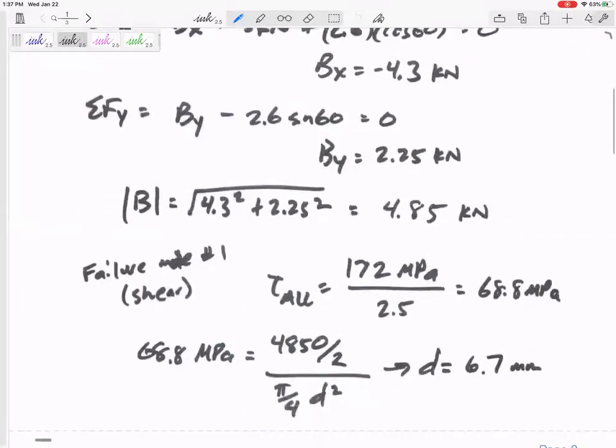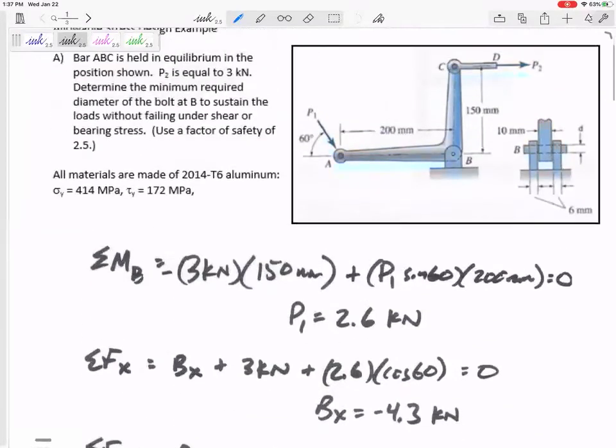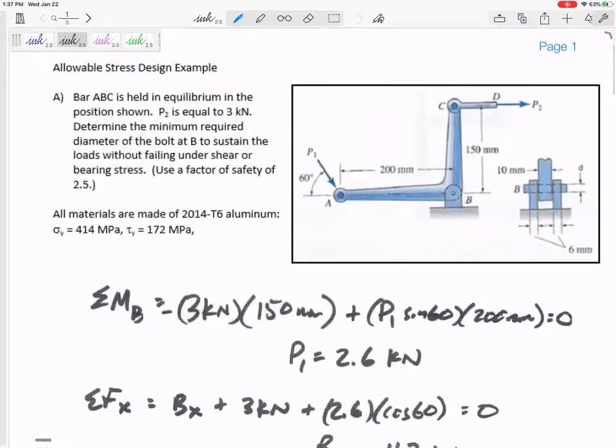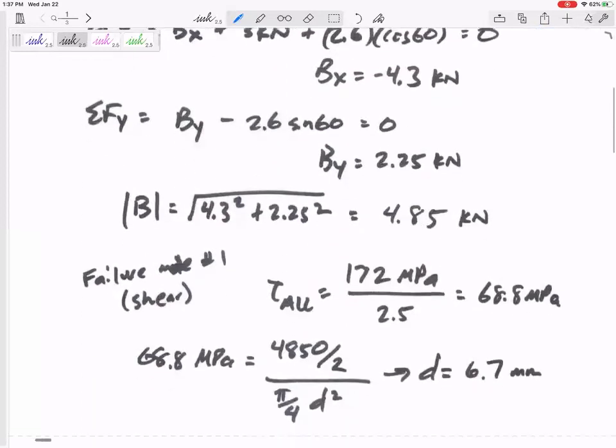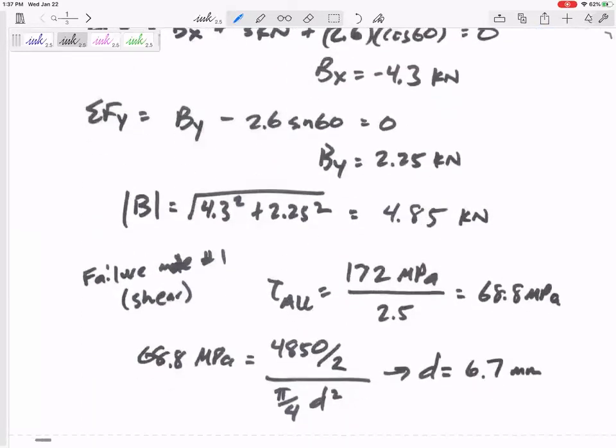For this pin we were given shear and bearing stresses, so kind of a red flag - at this pin check both shear and bearing. I said okay, well what if it fails due to shear? First of all, I know it's going to fail at 172 MPa and I was told to use a factor of safety of 2.5.